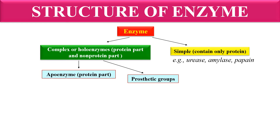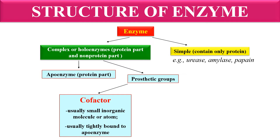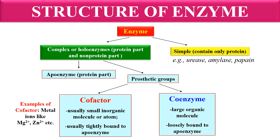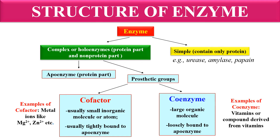Prosthetic groups are of two types. The first is a cofactor — when the non-protein part is a small inorganic molecule or atom, it is called a cofactor, and it binds tightly with the apoenzyme. Examples of cofactors include metal ions like magnesium ion and zinc ion. The prosthetic group can also be a coenzyme — if the non-protein part is a large organic molecule, it is called a coenzyme, and coenzymes are generally loosely bound to the apoenzyme. Examples of coenzymes include vitamins and compounds derived from vitamins. So cofactors are small inorganic molecules with tight binding, while coenzymes are large organic molecules with loose binding.